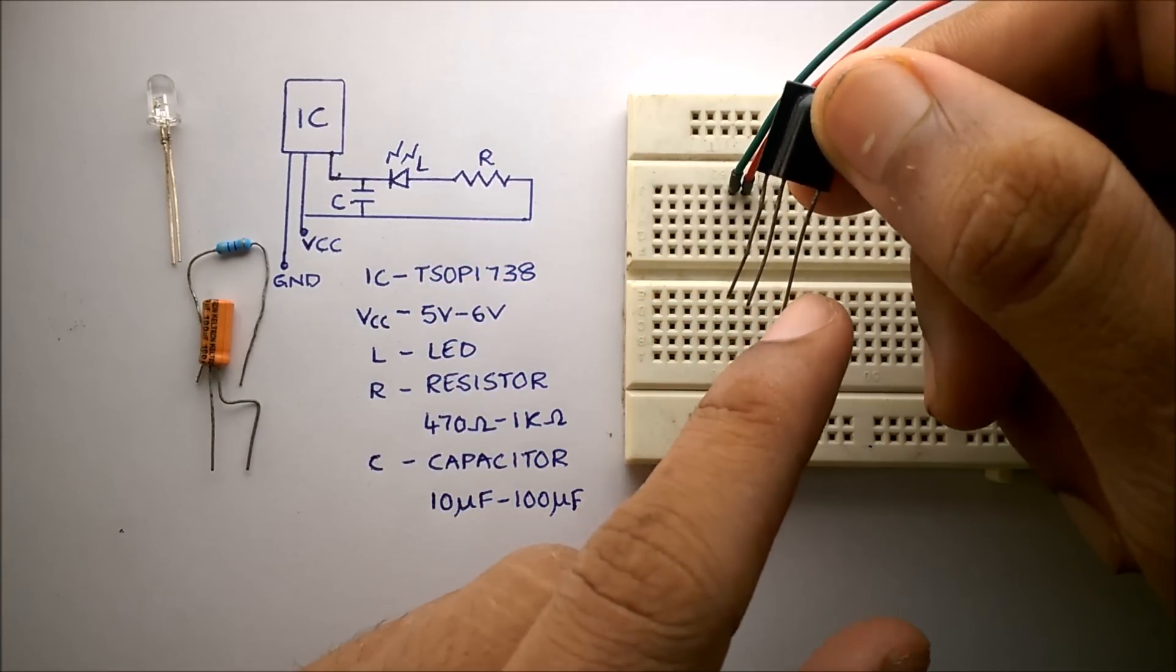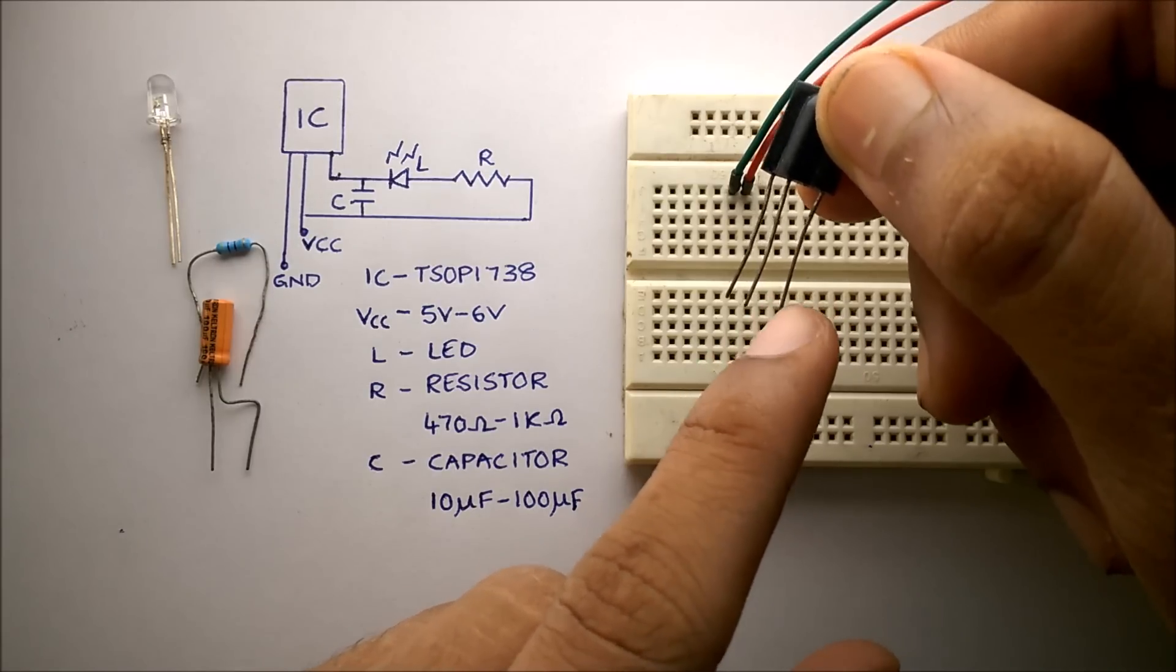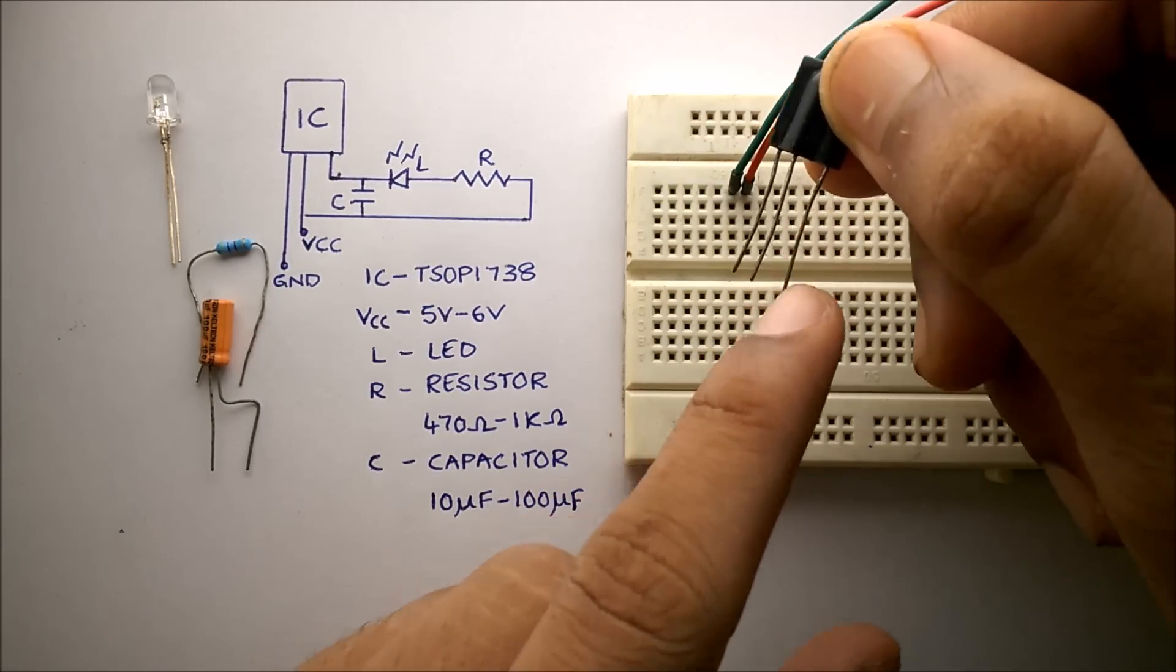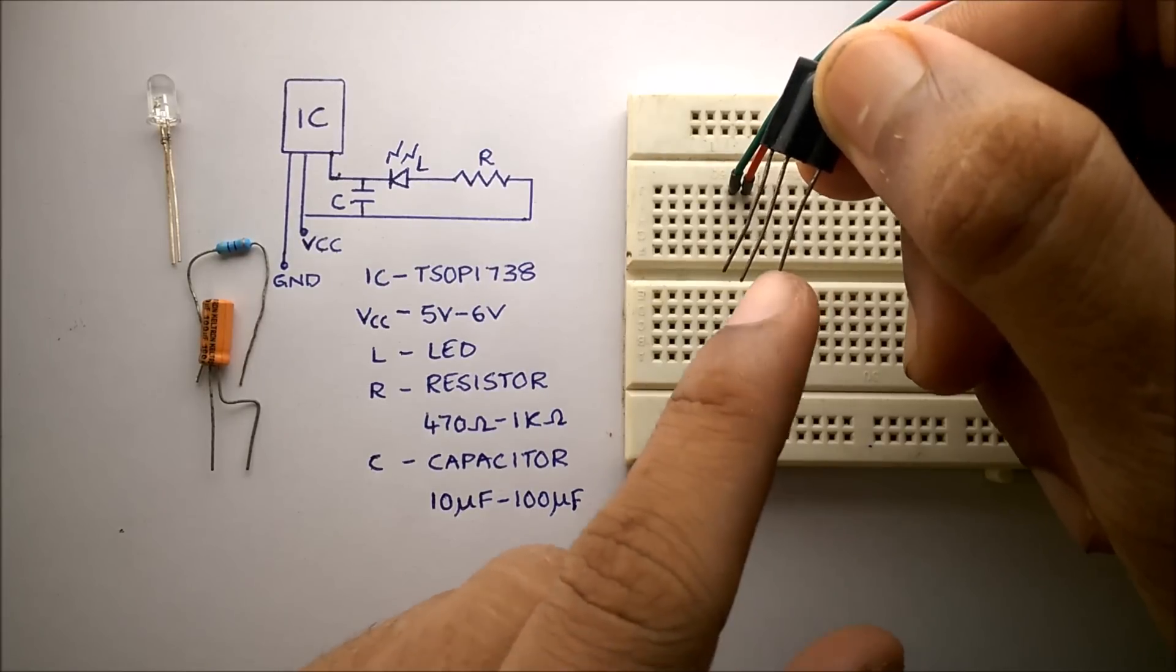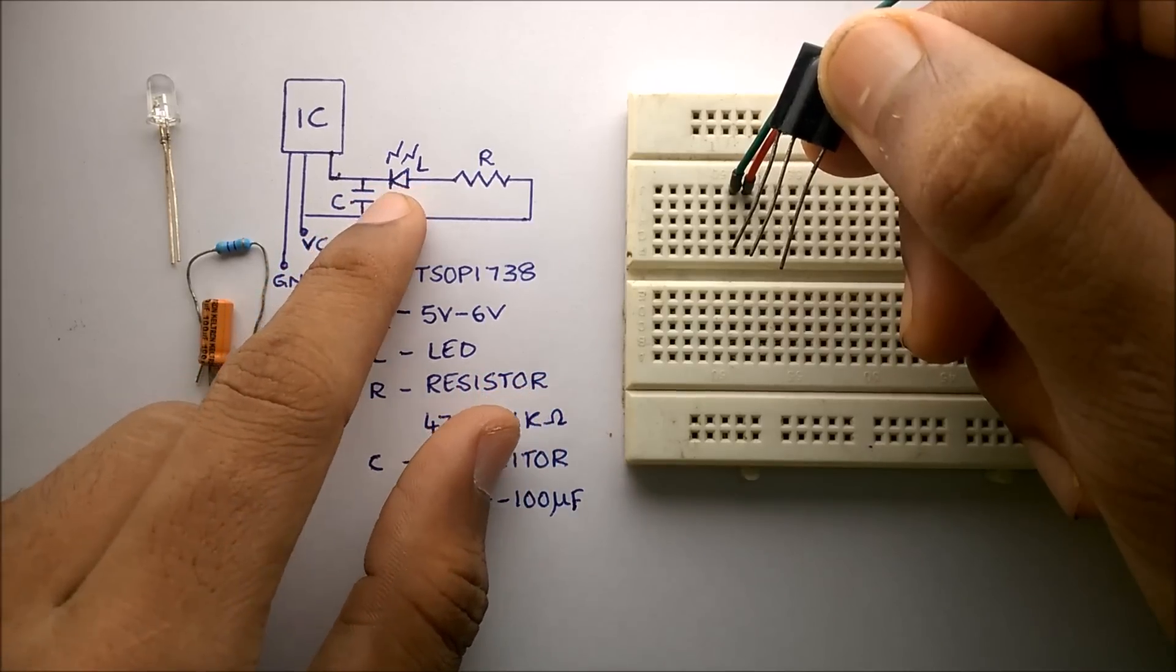Now the third pin is the output, which gets active low. That means whenever you press a button on the remote control, this pin gives out 0 volts. So this pin has to be connected to the negative terminal of the LED.